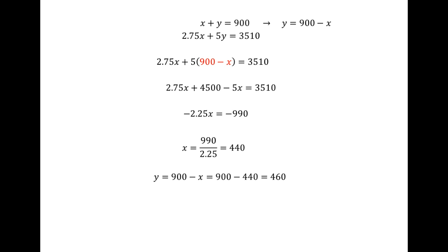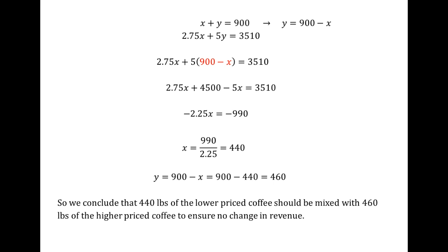We don't want to leave that as the final answer — someone else might not know what x and y stand for. So we conclude: we need 440 pounds of the lower-priced coffee and 460 pounds of the higher-priced coffee, which ensures no change in revenue. That's the typical setup: we always have a constraint equation and a balance equation for these mixture problems.